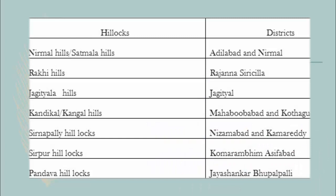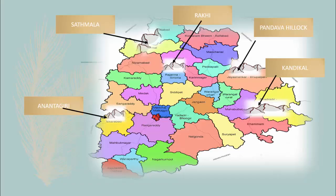Now let us see them on the map of our state, Telangana. Look at the table — here are the names of the hills and hillocks and the districts where they are located. Nirmal hills or Satmala hills are in Adilabad and Nirmal districts. Raki hills are in Rajanna Sirsilla district. Jagityal hills are in Jagityal district. Kandikal or Kangal hills are in Mahabubabad. Kuttagudam Sirnapalli hillocks are in Nizamabad and Kamareddy. Sirpur hillocks are in Komaram Bheem Asifabad. Pandava hillocks are in Jayashankar Bhupalpally districts.